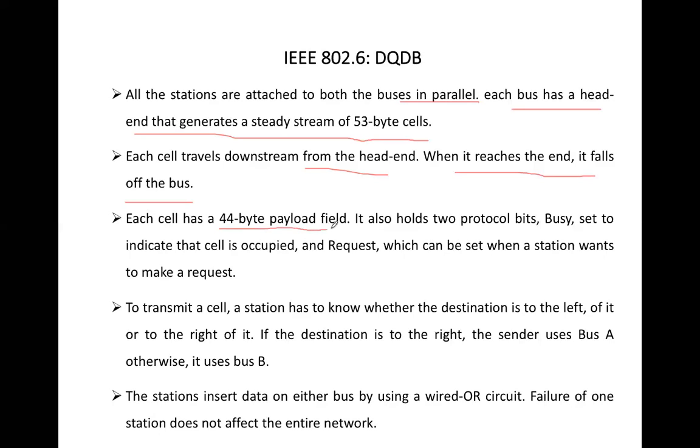Each cell has a 44 byte payload field. Obviously, in every cell, the payload contains control information and data. The station needs to know the location of the station to whom it wants to transmit the data. For example, if A wants to transmit the data to B, then A should be clear with the fact that B is on which side. Is B on the right-hand side or left-hand side? Because if it's on the right-hand side, bus A will be used. If it's on the left-hand side, bus B will be used. So every station, before transmitting data, should know which side the destination station is on.